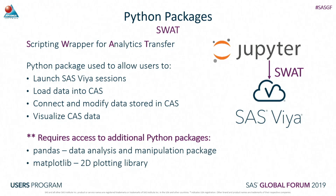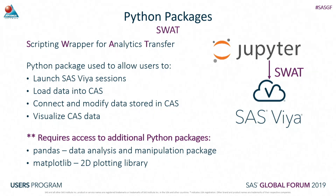If you want to use the full functionality, you may need some additional packages. Two that I've chosen to use, in addition to SWOT, include pandas - a data analysis and manipulation package - and also matplotlib, which is a 2D plotting library. We can use this to create things such as histograms and box plots.